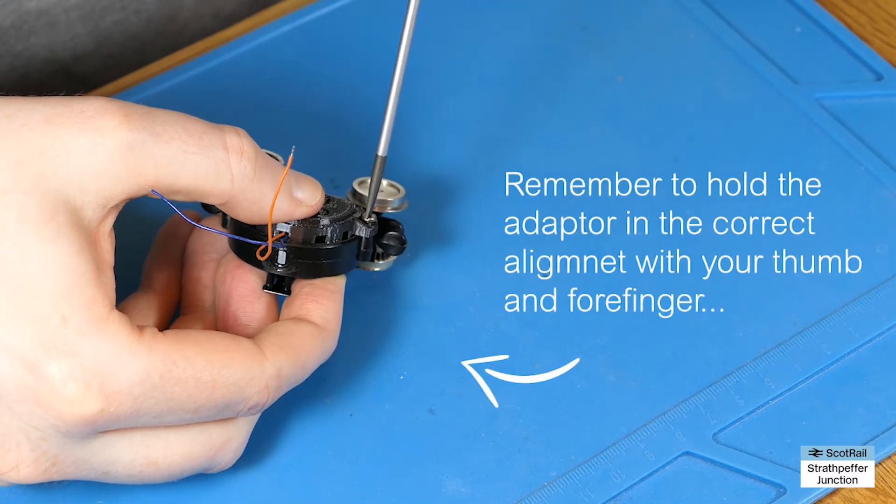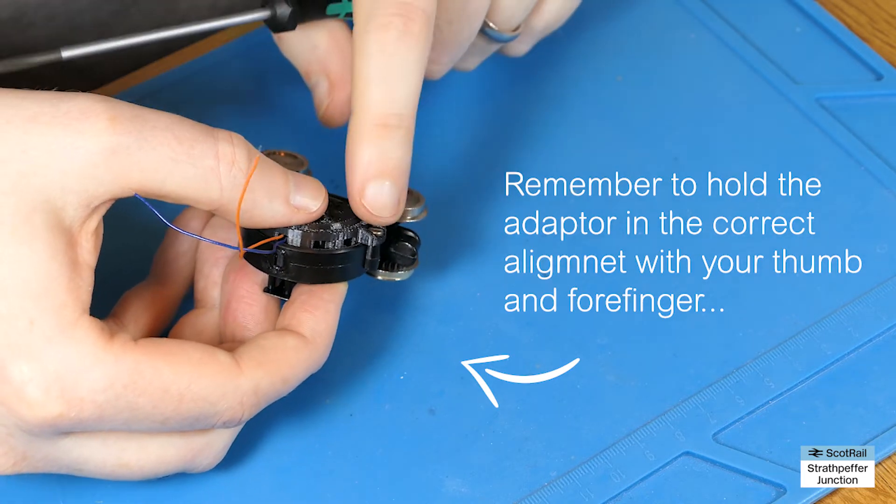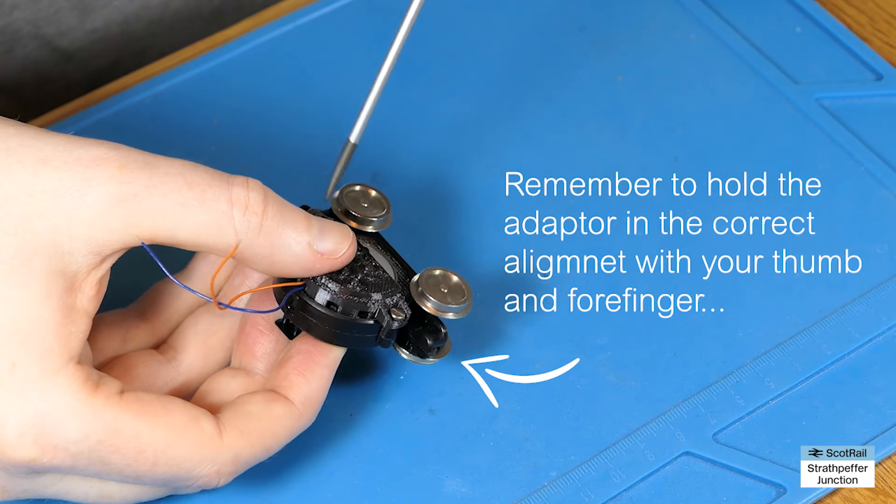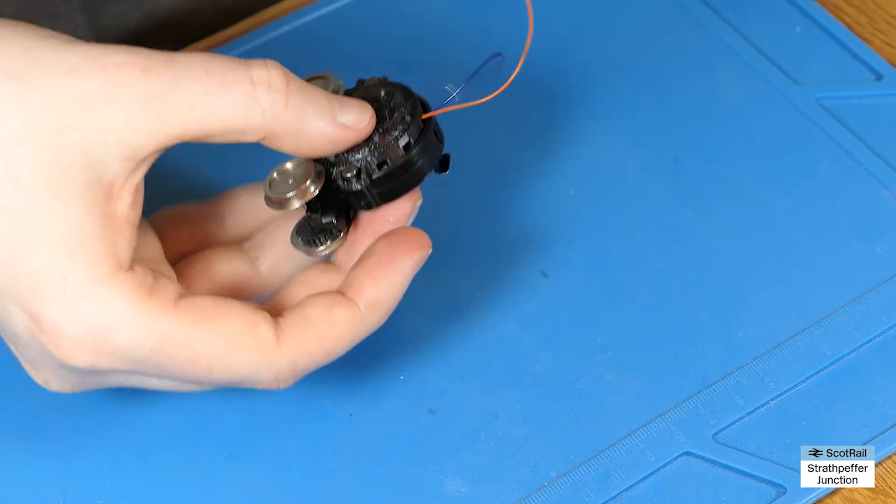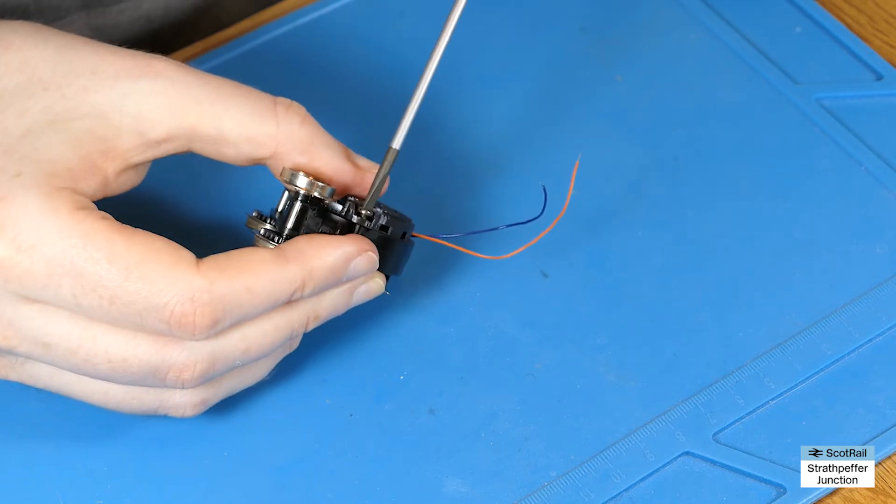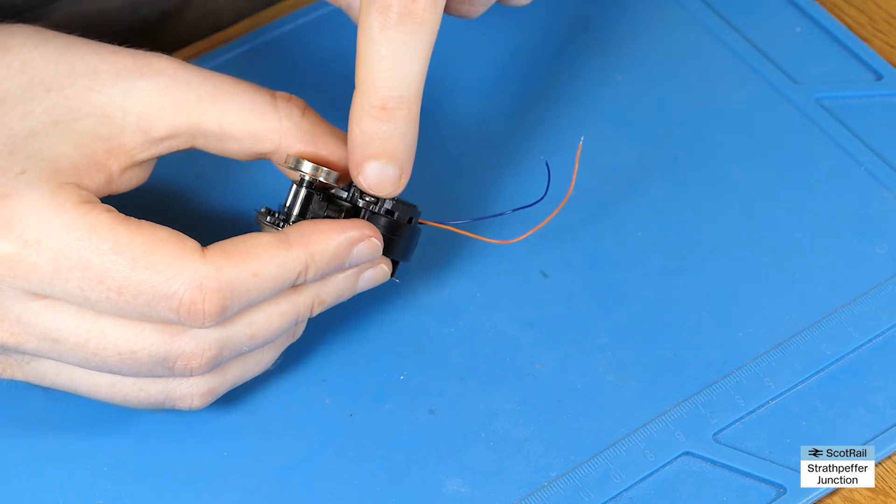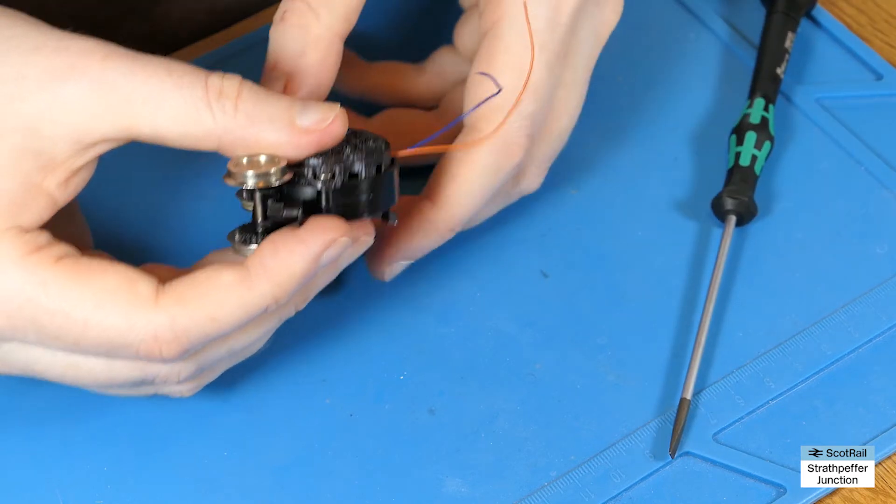Then come over to the back here and tighten these up. As I've stressed and probably said a number of times in this video now, when you're tightening these up don't tighten them too tightly. Just tighten them enough so that the screw has just bitten down on top of the adapter - that's all it needs to be.